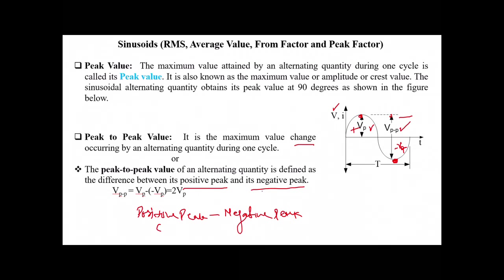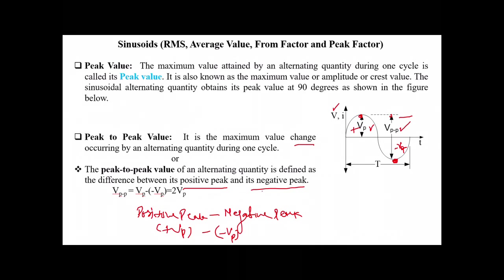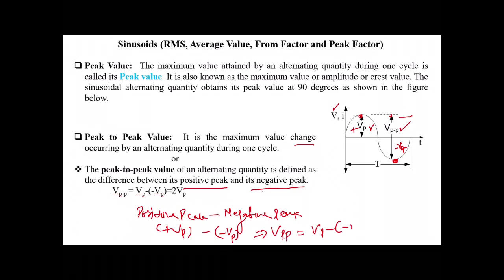The value of the positive peak is +Vp and the value of the negative peak is -Vp. So Vpp equals Vp minus (-Vp), which equals Vp plus Vp, giving us Vpp = 2Vp.